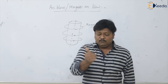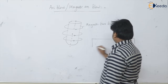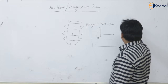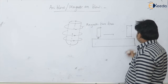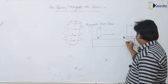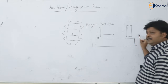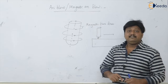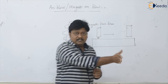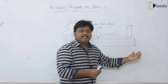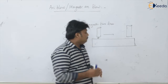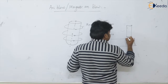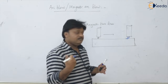In arc welding, when you are doing the welding operation and you reach the end of the base material, the magnetic flux lines are moving with the electrode. When these flux lines come to the edge, they cannot move into the air, so the arc experiences a backward pull — this is the backward pull.